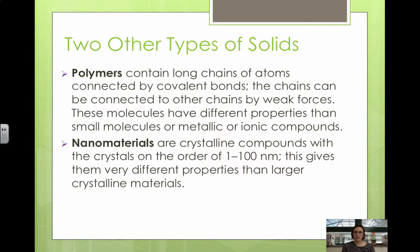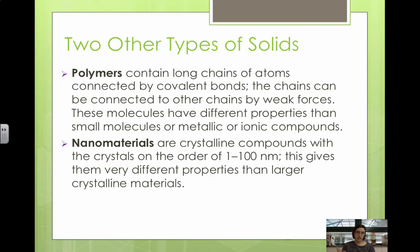Nanomaterials are crystalline compounds that are orders of magnitude smaller than other solids, giving them very different properties from larger crystalline materials. One example is carbon nanotubes, which are extremely strong — stronger than steel — and have caused scientists to explore options for carbon-based electronics. Polymers fall into organic chemistry; nanomaterials fall under the nanotechnology field.